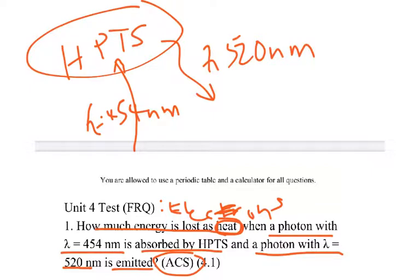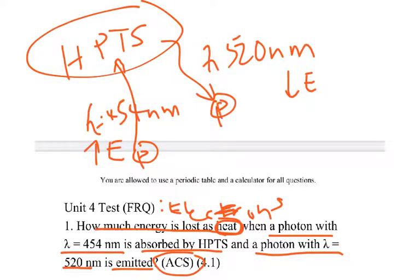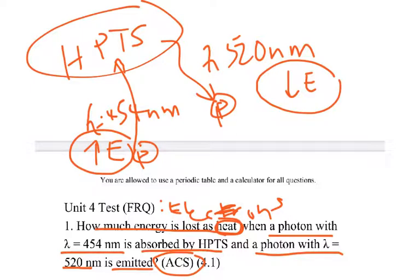Things with a higher wavelength have a lower energy. So the 454nm photon has a higher energy, and the 520nm photon has a lower energy. It's saying that when one photon was absorbed and then another came out, the photon actually lost energy because at the beginning it had more energy, but afterwards it has less. This lost energy was lost in the form of heat, as stated by the question. We have to determine how much heat was lost — one photon going in and one photon going out with a different amount of energy.